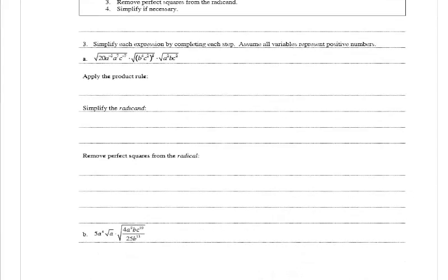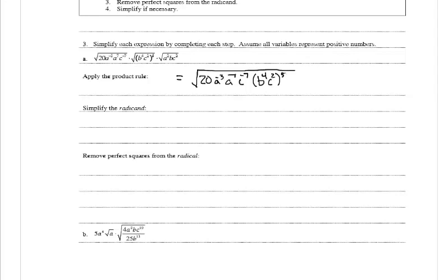In number 3, part a, we simplify the square root of 20 times a to the negative 3rd, times a to the 7th, times c to the negative 7th, times the square root of b to the 4th times c squared, all raised to the 5th power, times the square root of a squared times b times c squared. Assume all variables represent positive numbers. The first step is to apply the product rule, combining everything under a single radical: the square root of 20 times a to the negative 3rd times a to the 7th times c to the negative 7th, times b to the 4th times c squared all raised to the 5th power, times a squared times b times c squared.